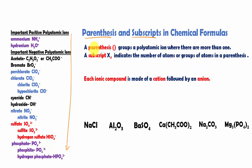First of all, parentheses group polytomic ions when there are more than one. That means if you have more than one of that polytomic ion in a chemical formula, we have to use parentheses so that we know we have more than one of these polytomic ions.